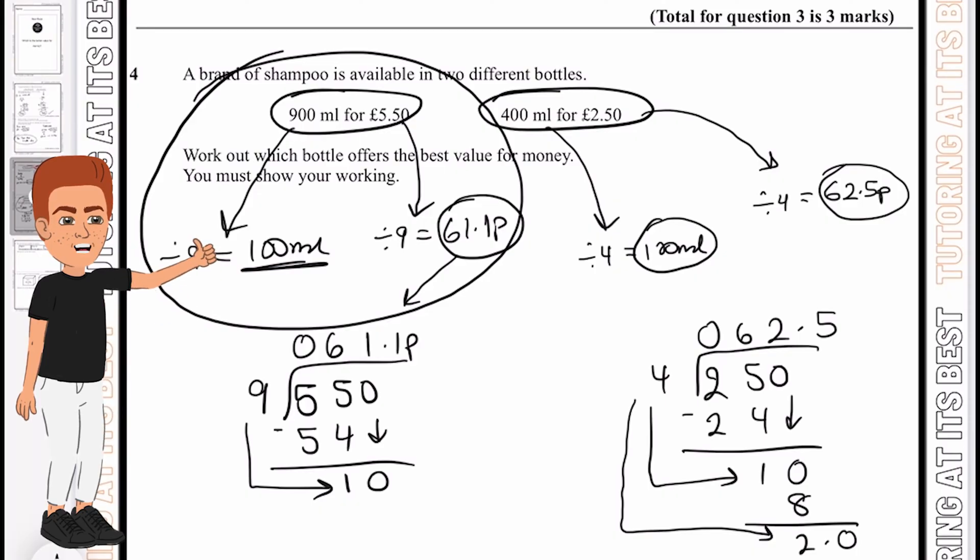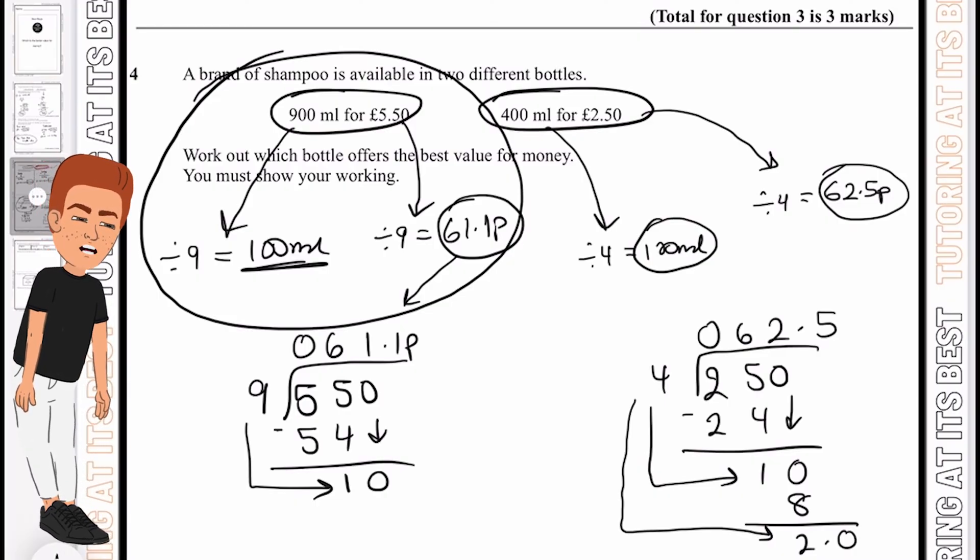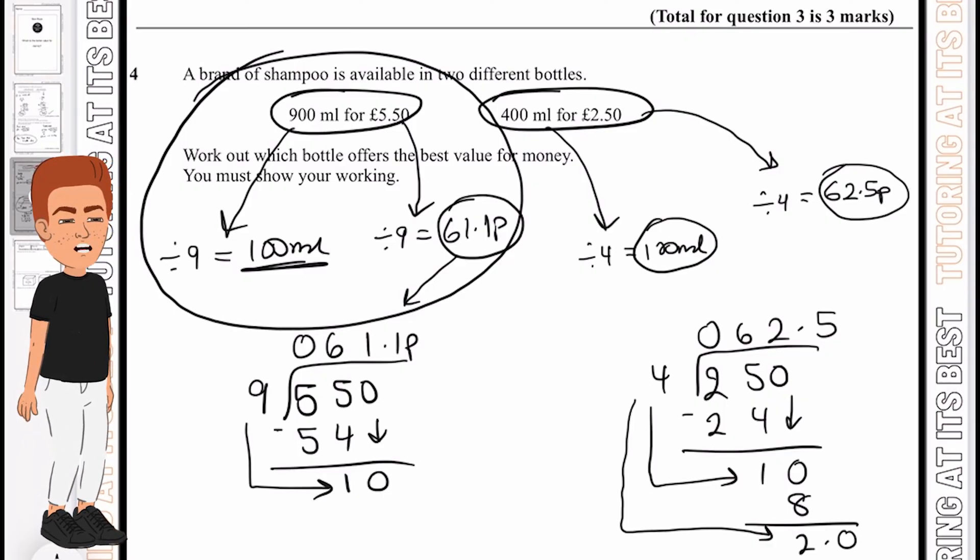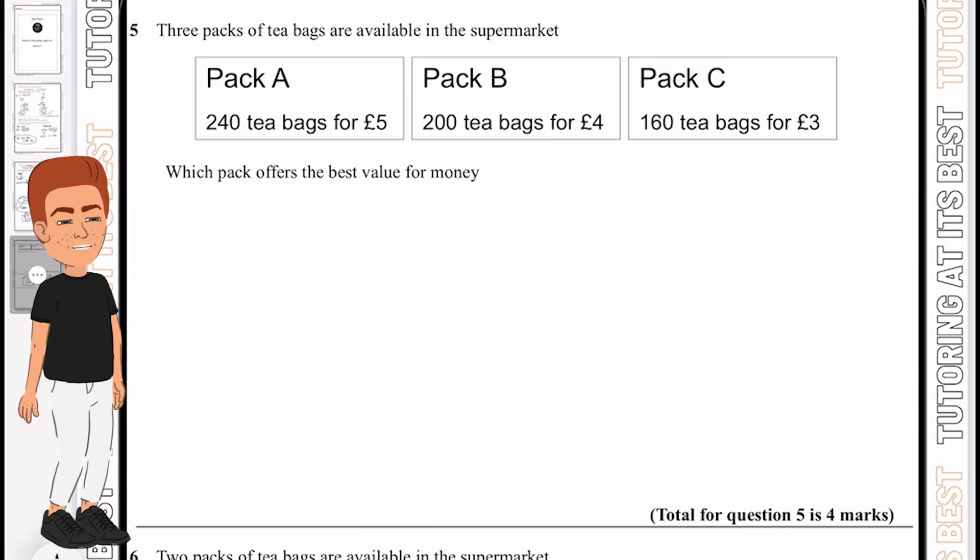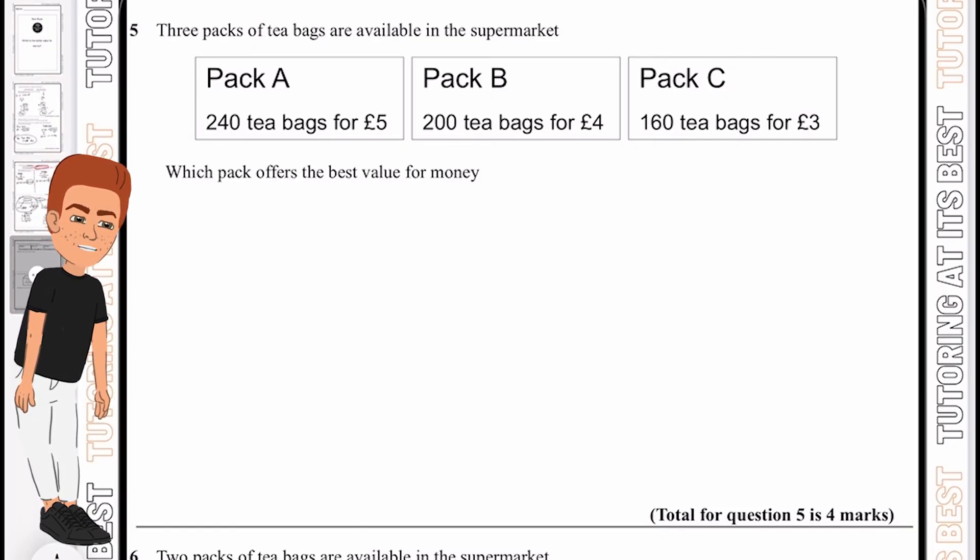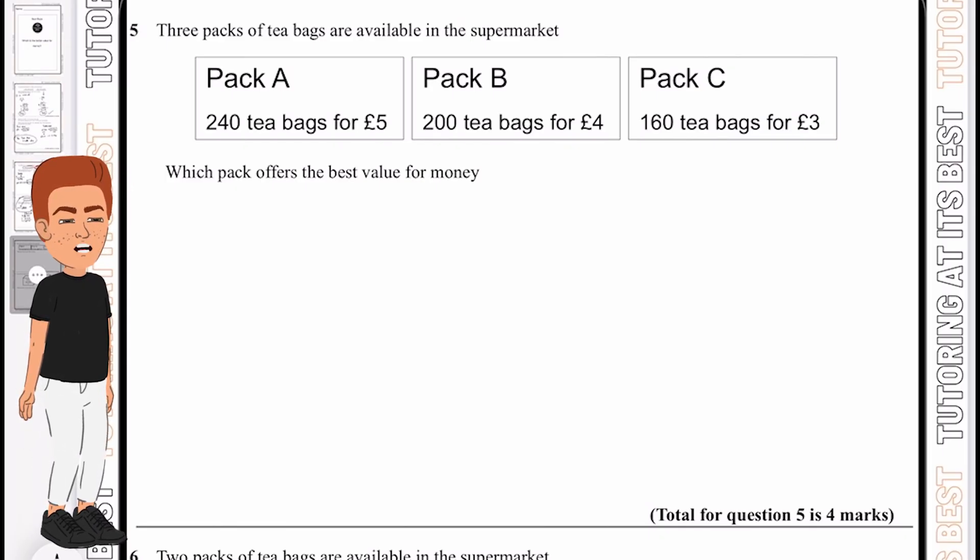You need to know your four operations really well: addition, subtraction, multiplication, and division. I hope you followed this question in detail and understand the methods we need to take. Let's move to question 5. Three packs of tea bags are available in the supermarket. Which pack offers the best value for money? I'm going to divide all the numbers to calculate how many tea bags I can get for one pound. This is a different method to show we can also calculate on the basis of one pound.